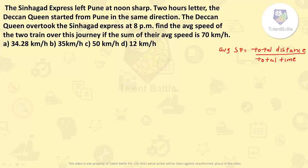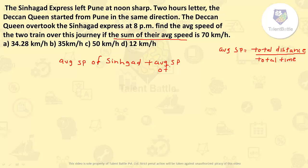Find the average speed of the two trains over this journey if the sum of their average speeds is 70. Sum of their average speeds means average speed of Sinhagad Express plus average speed of Deccan Queen equals 70. From this we can calculate the distance travelled by them. Rather than writing average speed of Sinhagad, I will use the formula total distance by total time.